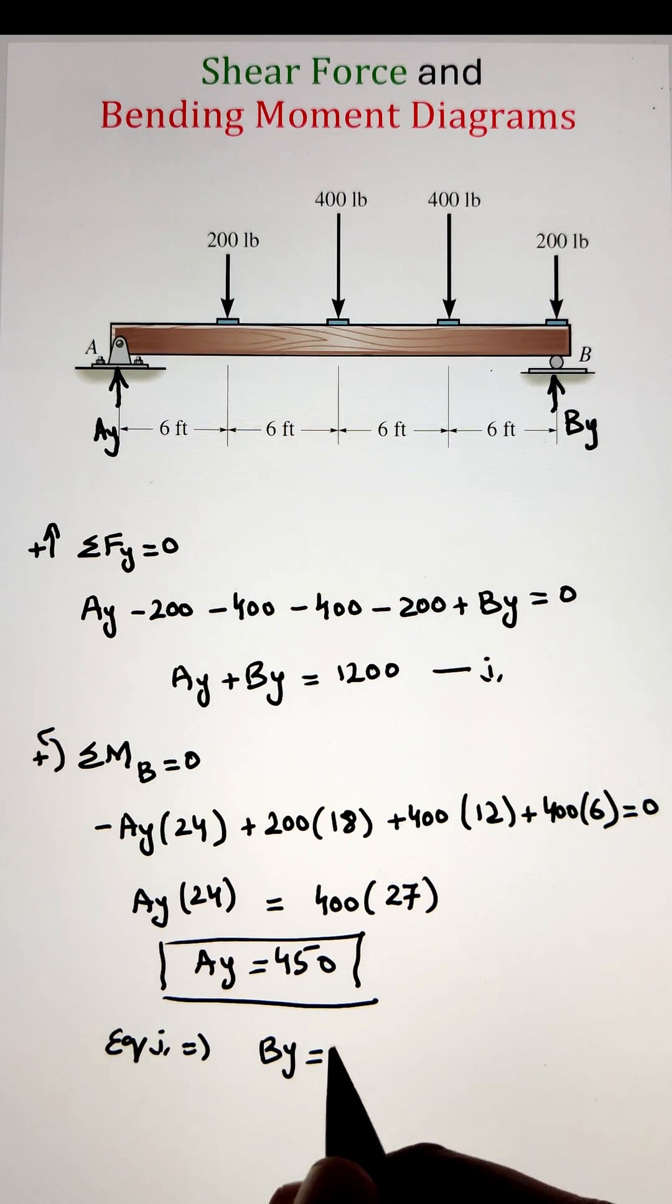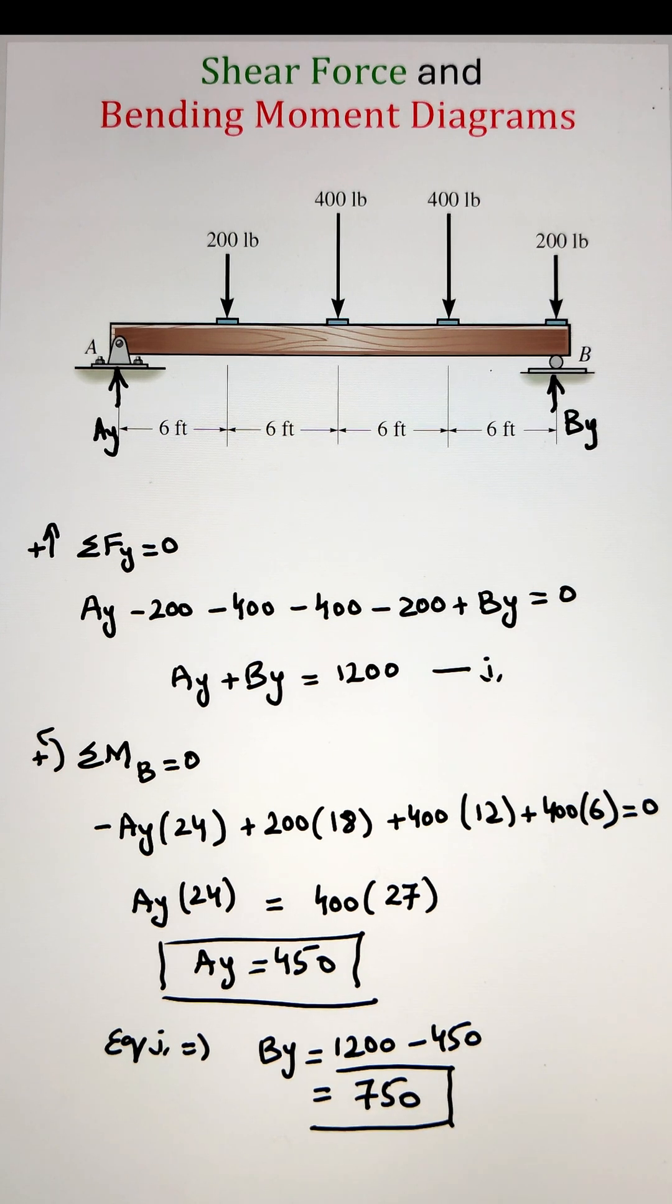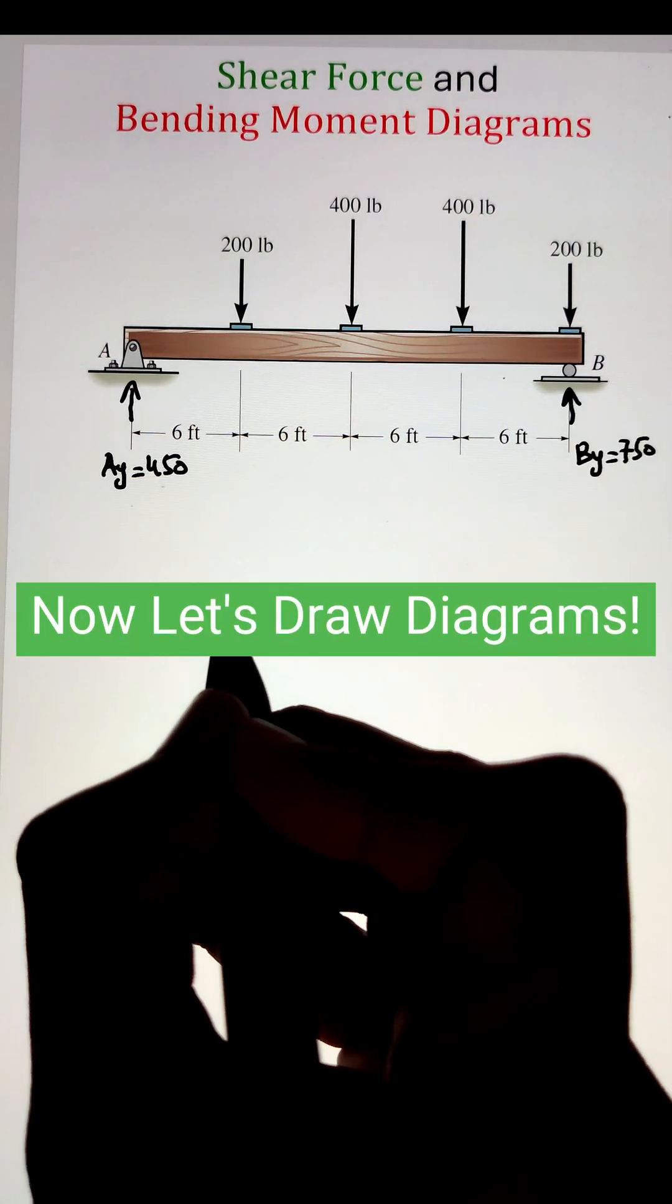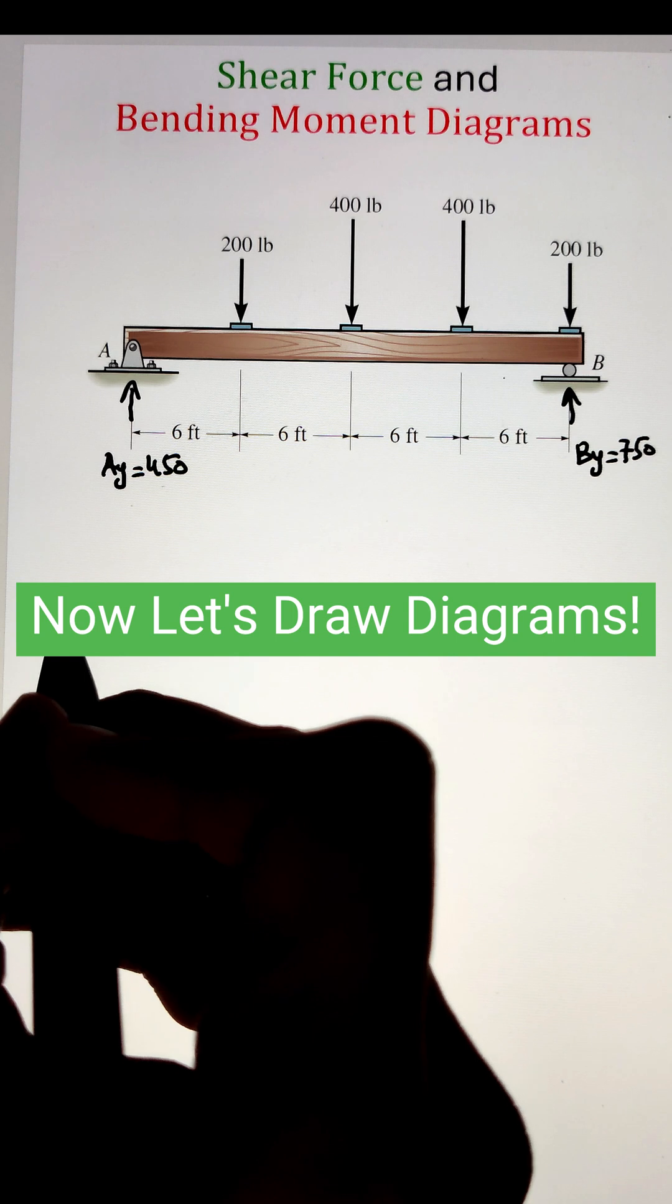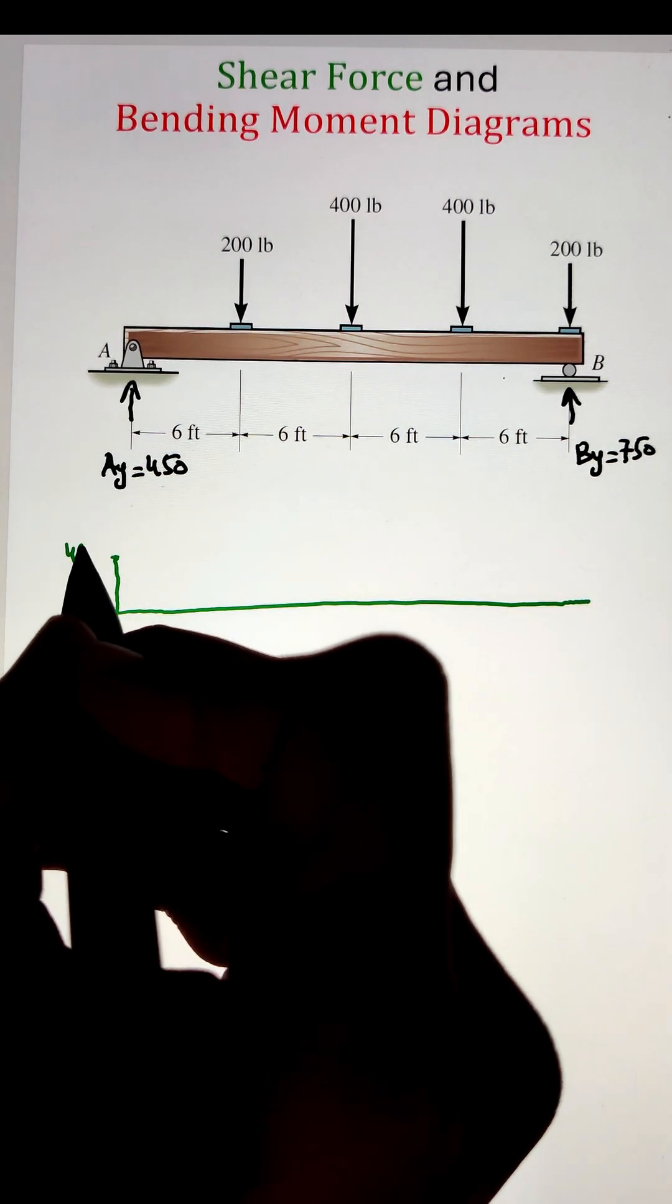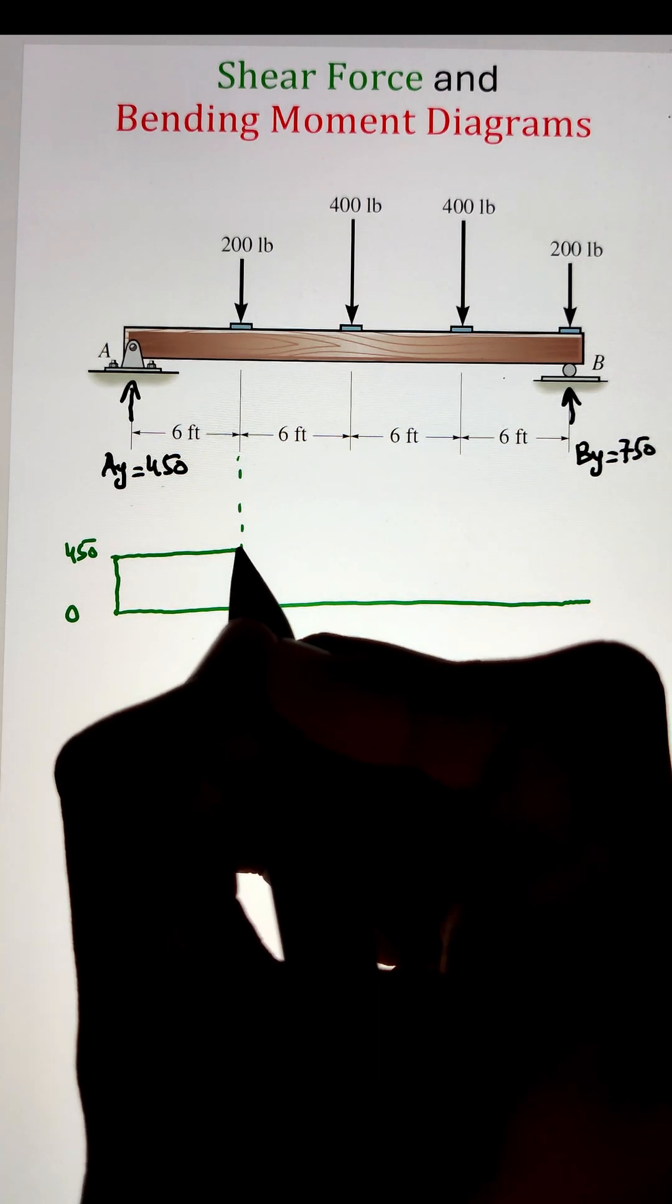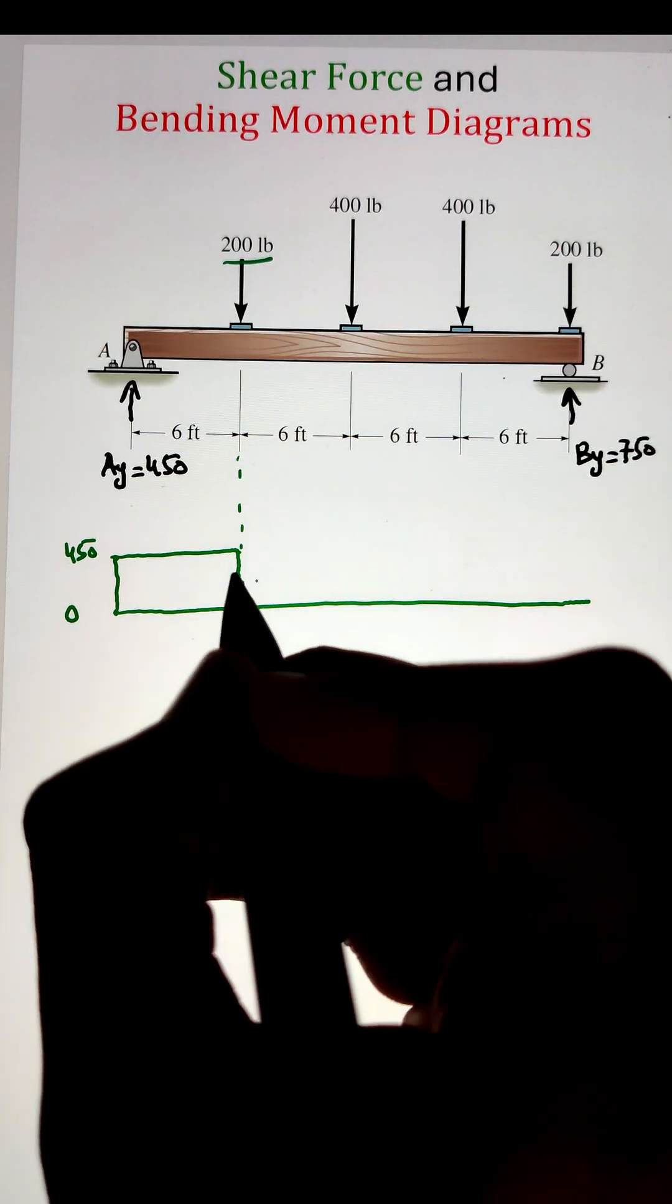Now, once we have the support reactions, we can now draw the shear force and bending diagram. So to draw the shear force diagram, we recall that point loads basically cause either jump up or jump down on the shear force diagram. So since at point A we have a load of 450 going upwards, our diagram will jump upward at 450 pounds.